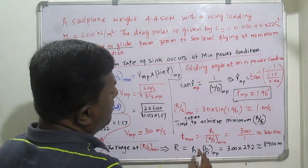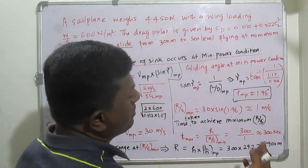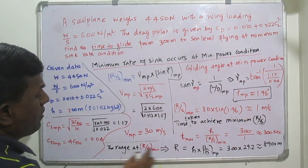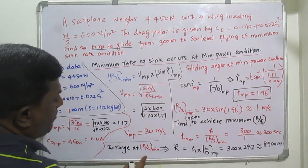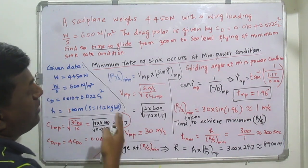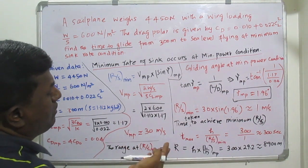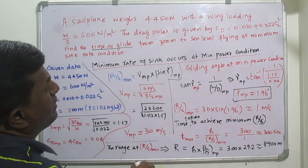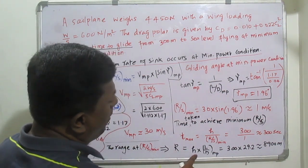So the time taken to glide from 300 meters to sea level is 300 seconds, which we can also convert into minutes. Now, having found the maximum time, let's find the range — that is, how much horizontal distance is covered while flying from 300 m to sea level at minimum rate of sink conditions.